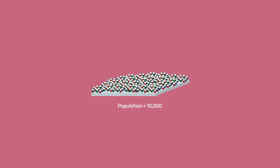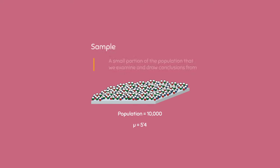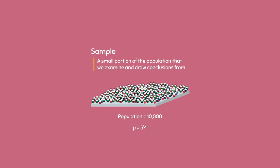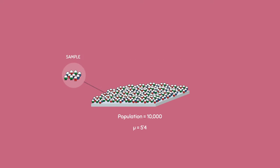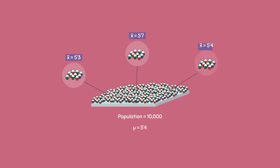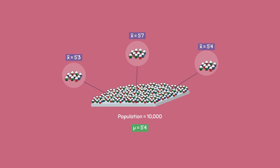Suppose we have a population of 10,000 people and we know that the mean height of everybody in this population is 5'4". Recall that a sample is a small portion of the population that we examine and draw conclusions from. So from one sample, the average height could be 5'3", but in a different sample the average height could be 5'7", or 5'4". Notice how the sample mean doesn't always have to be equal to the population mean.